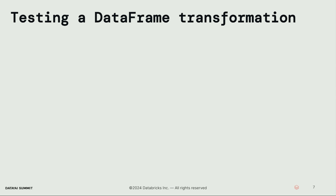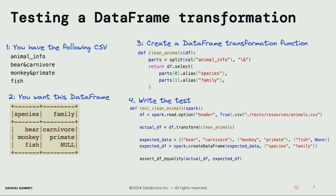Let's dive in and look at testing a DataFrame transformation. Suppose we have a CSV with an animal info column — it's a funky dataset with two different types of data separated by the ampersand sign. We'd like to read in that CSV into a DataFrame with species and family columns. What we can do is create a clean_animals function that takes a DataFrame as an argument and returns a DataFrame, splitting the animal info column on that ampersand symbol and separating out the species and family columns. That clean_animals function is known as a DataFrame transformation — a function that takes a DataFrame as an argument and returns a DataFrame as a result.